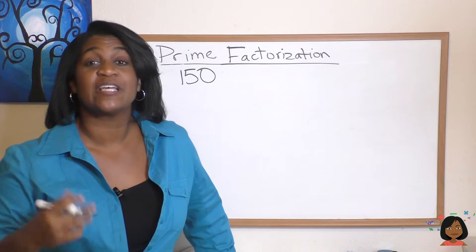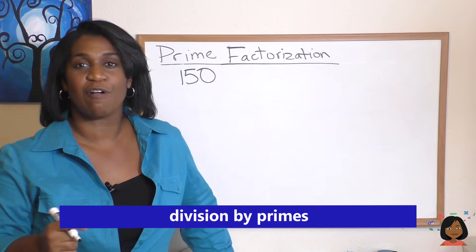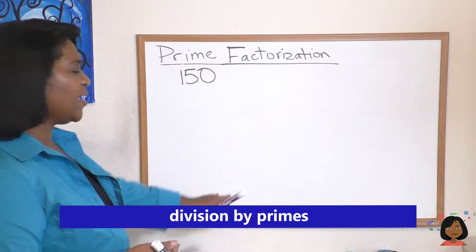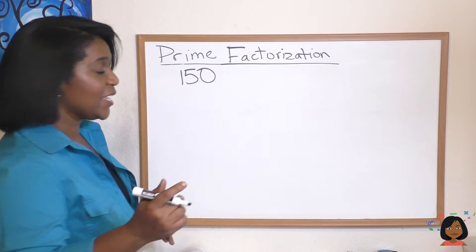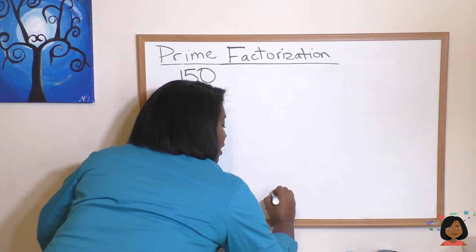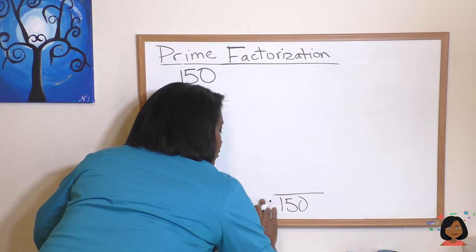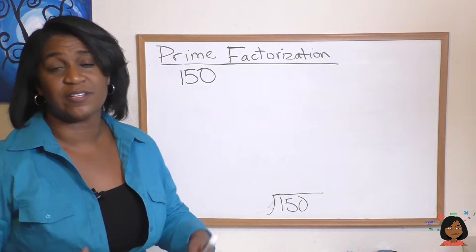The factor tree is one way to do factoring. There is another way called division by prime. So let me show you that way. We're going to use the number 150. And I'm going to do something a little strange. I'm going to start writing at the bottom of my board. Here's why. I'm going to put 150 in. Make that a little nicer. There we go.